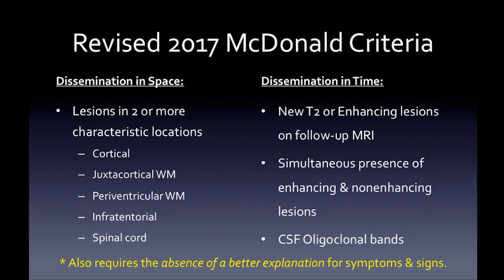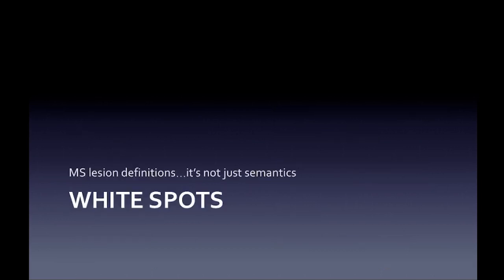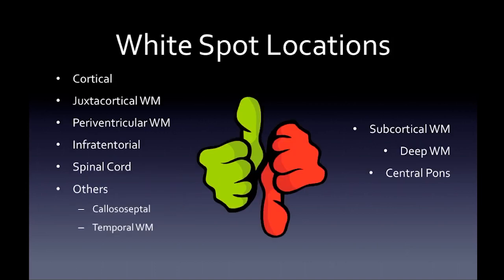The MS lesion definitions are not just semantics. White spot locations to look for: cortical, juxtacortical, periventricular, infratentorial, spinal cord, and two others I've found helpful over time — callosal-septal interface and anterior temporal lobe white matter. Locations that are not specific for MS include subcortical white matter, deep white matter, and patchy central pons appearance seen with chronic small vessel ischemic changes.